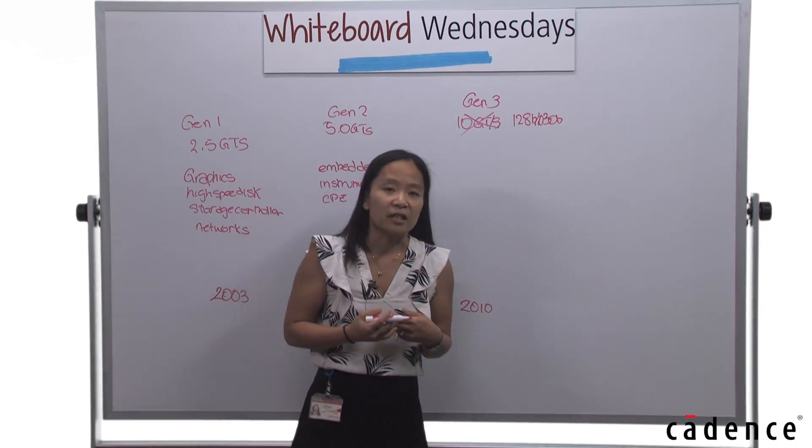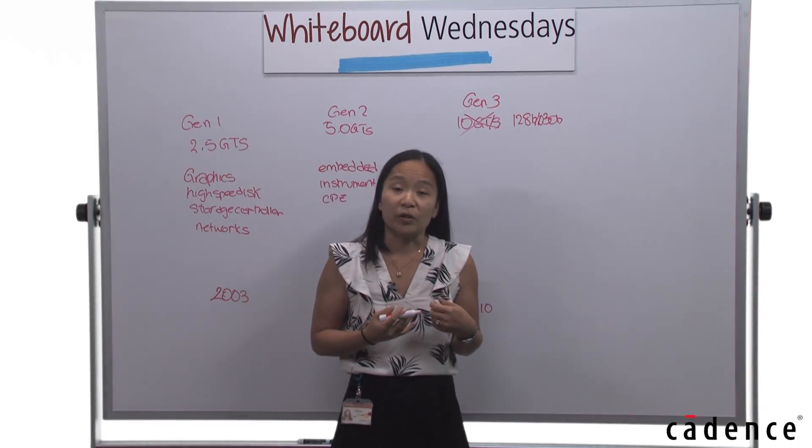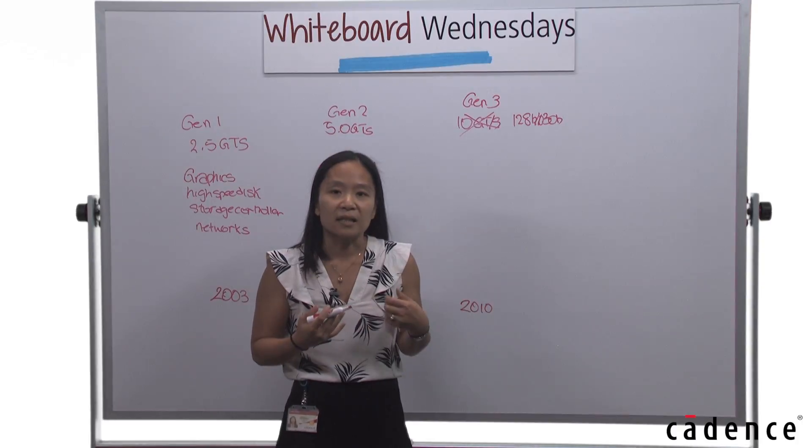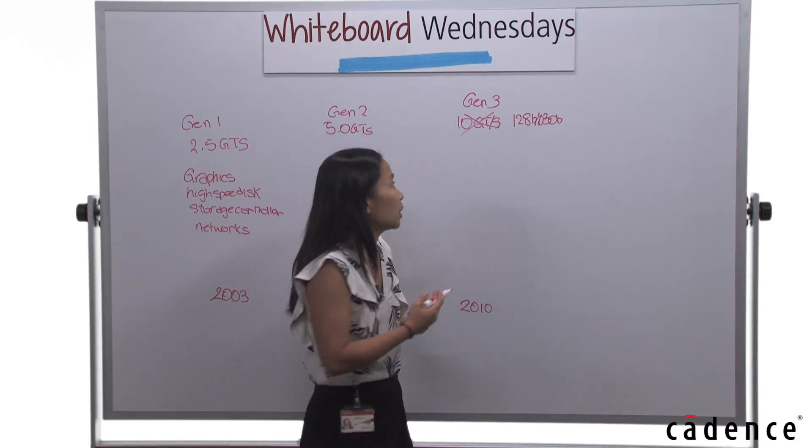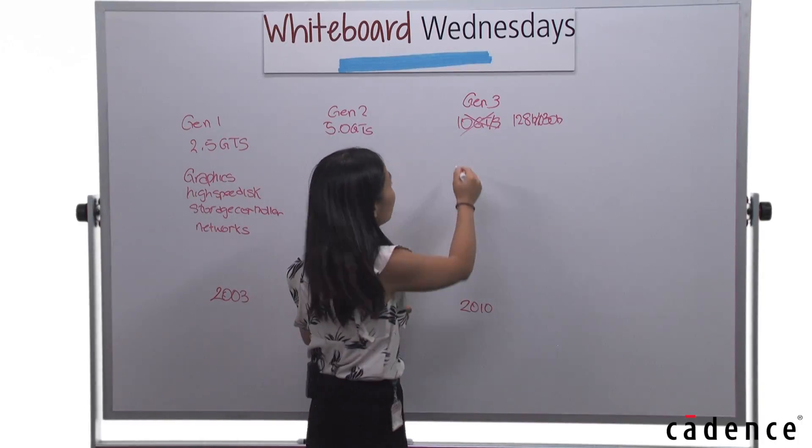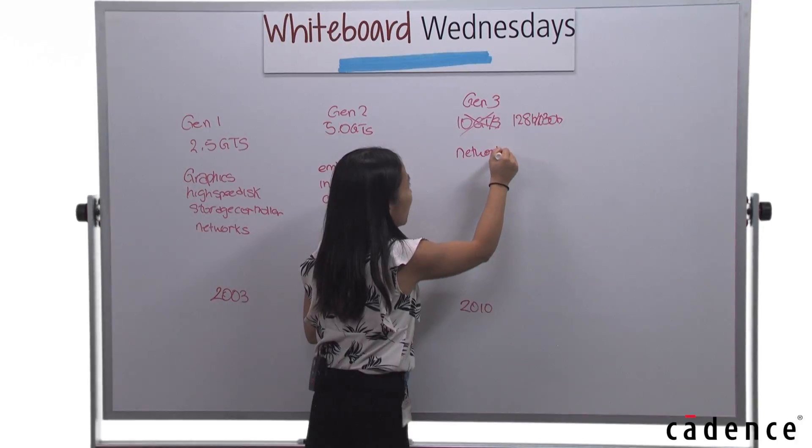So what instead the community looked at was how could they double the data throughput while using the same technology. They looked at changing the encoding scheme from 8-bit, 10-bit to 128-130-bit encoding. This reduced the overhead of the encoding, thus effectively increasing the data throughput. So now we could actually meet the requirements for the networks caused by our connectivity.